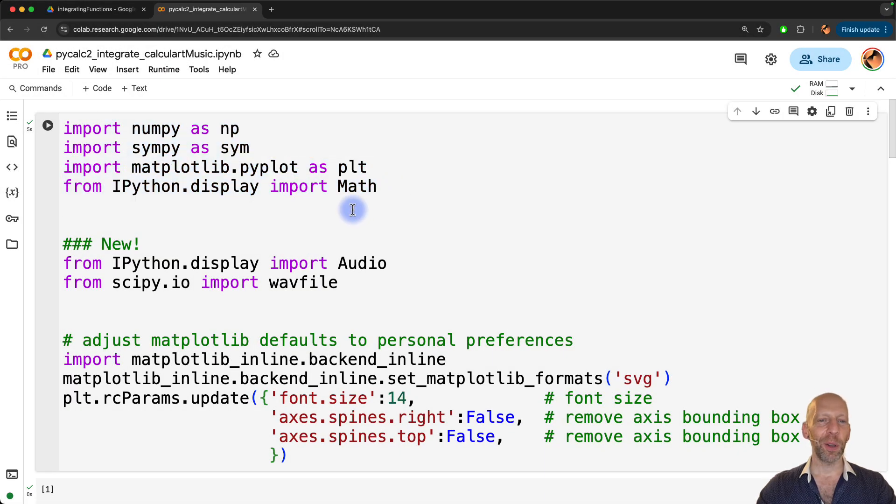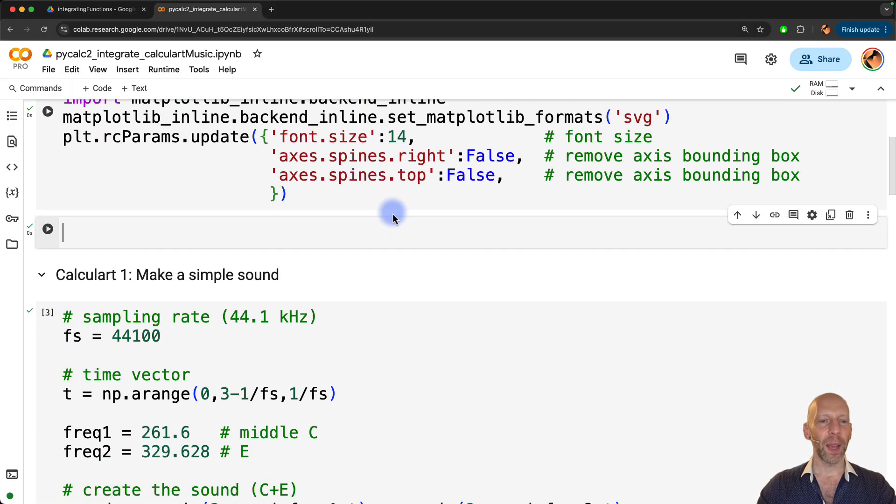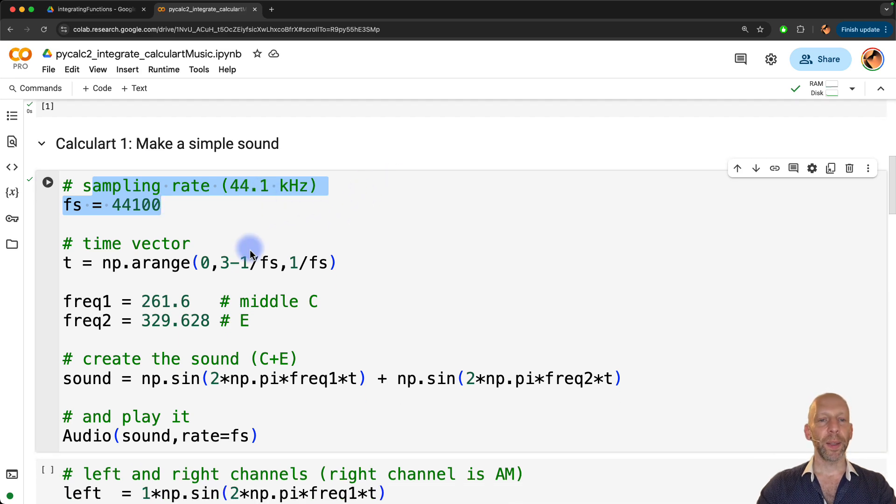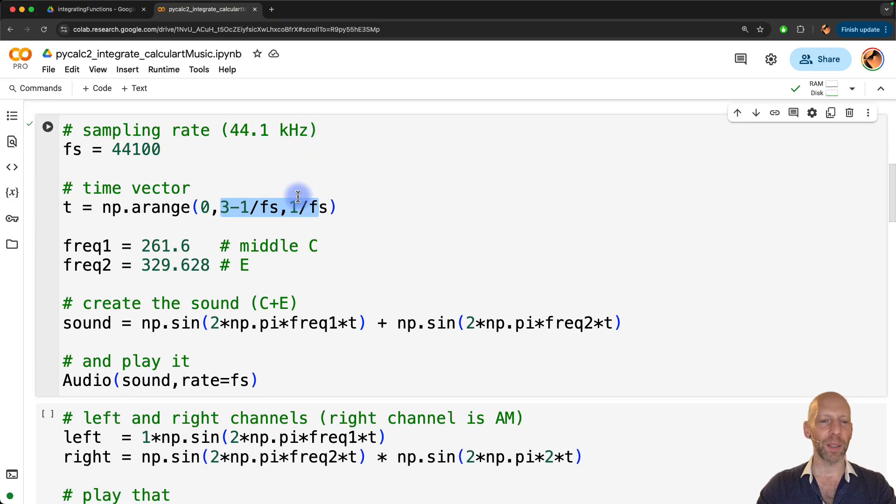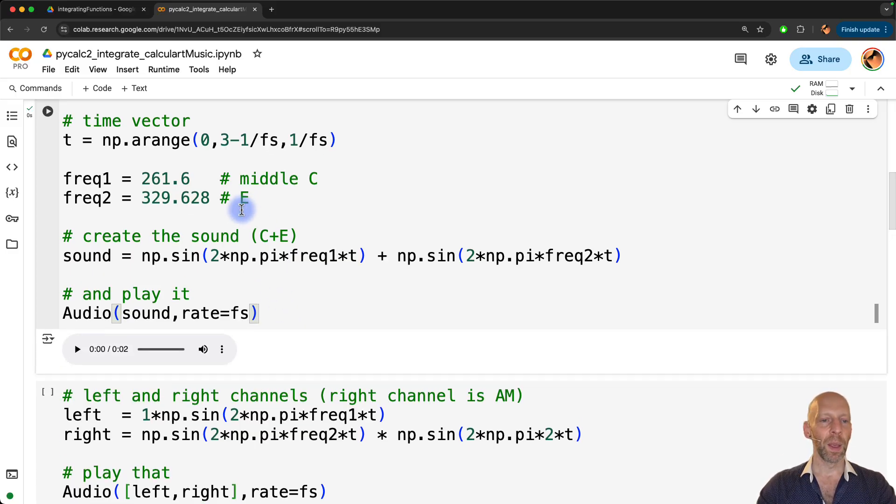Importing the typical libraries that I almost always use. And here are these two additional functions that I mentioned a moment ago. Okay, here we're going to make a simple sound. I have the sampling rate, 44.1 kilohertz. Here is the time vector. I go from zero to actually not exactly three. I'm taking one sampling rate off. That gives me exactly three seconds in total because here I'm starting at zero. So this is very slightly different from what I showed in the slide, but that's OK. Here are the two frequencies that I'm specifying in hertz. And here is the sound. So I have the sum of two sine waves where each sine wave is defined as the sine of 2 pi f t and for these two different frequencies. And then we can play it using this function, audio, with this sound variable that I created here and the sampling rate that I have defined. So I hope you can hear this.